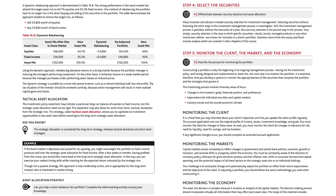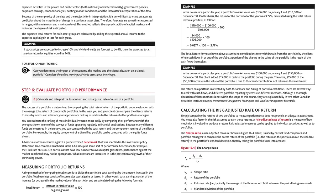Monitoring the economy: the asset mix decision is complex because it involves an analysis of all capital markets. The decision-making process should incorporate virtually all information that may affect each asset class, including expected activities in the private and public sectors both nationally and internationally, government policies, corporate earnings, economic analysis, existing market conditions, and the forecaster's interpretation of the data. Because of the complexity of the data and the subjectivity in interpretation, it is very difficult to make an accurate prediction about the magnitude of change in a particular asset class. Therefore, forecasts are sometimes expressed in ranges with a minimum and maximum level.